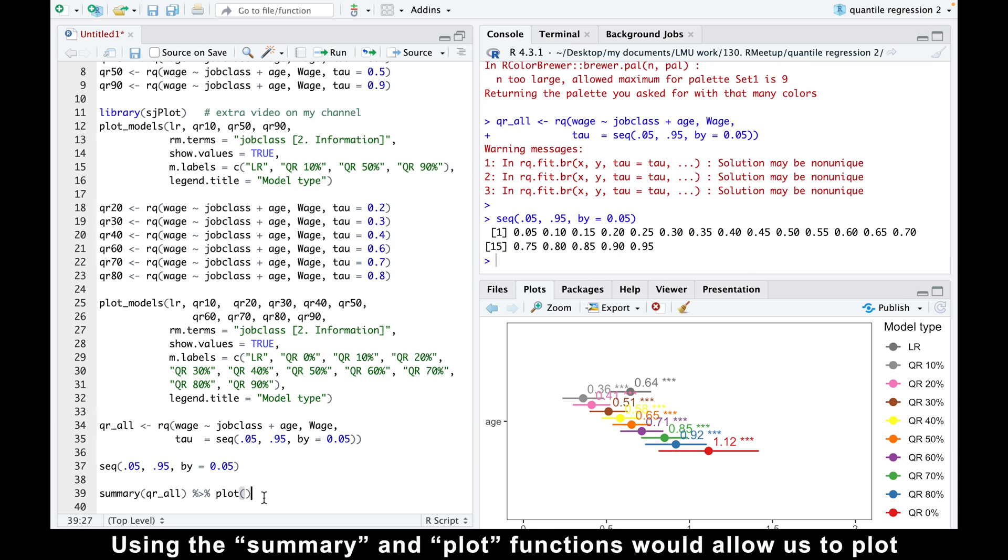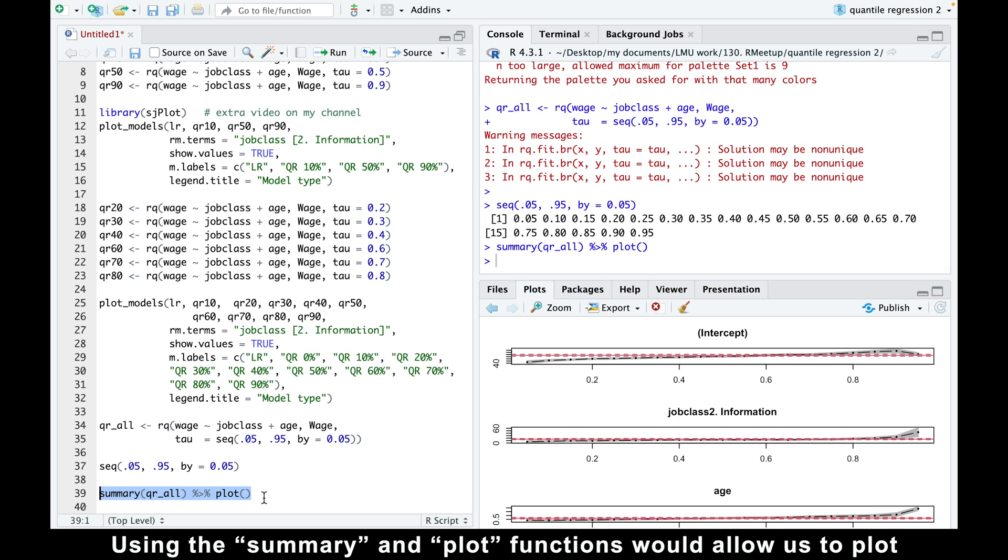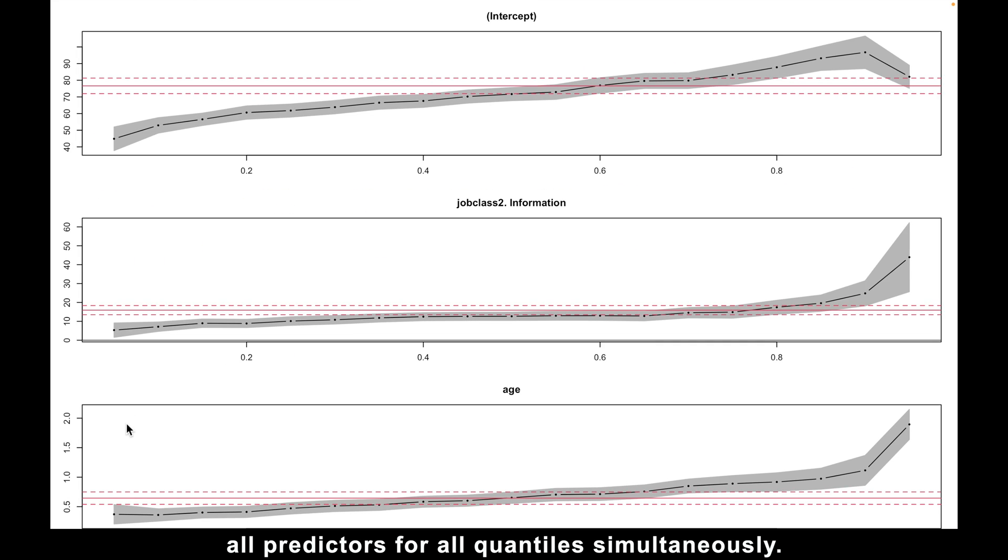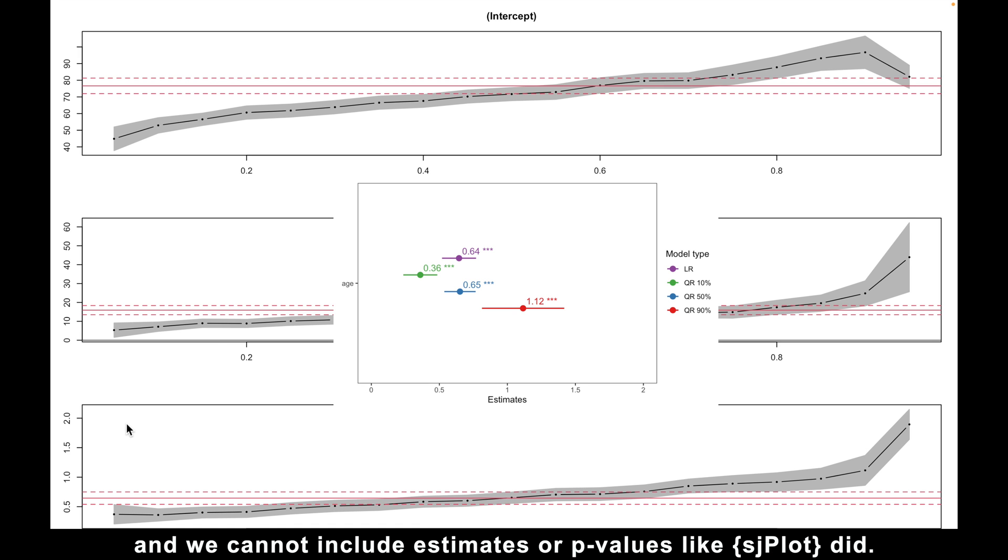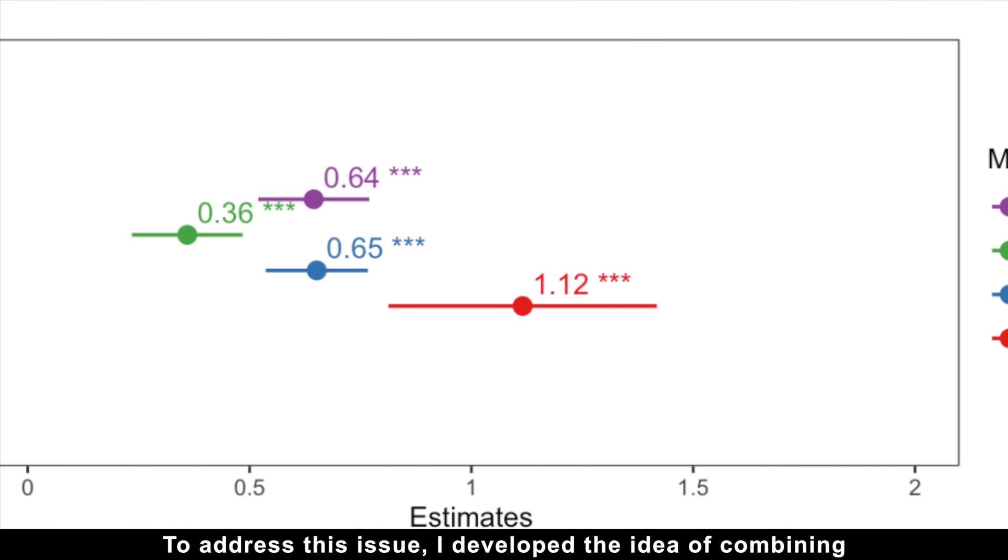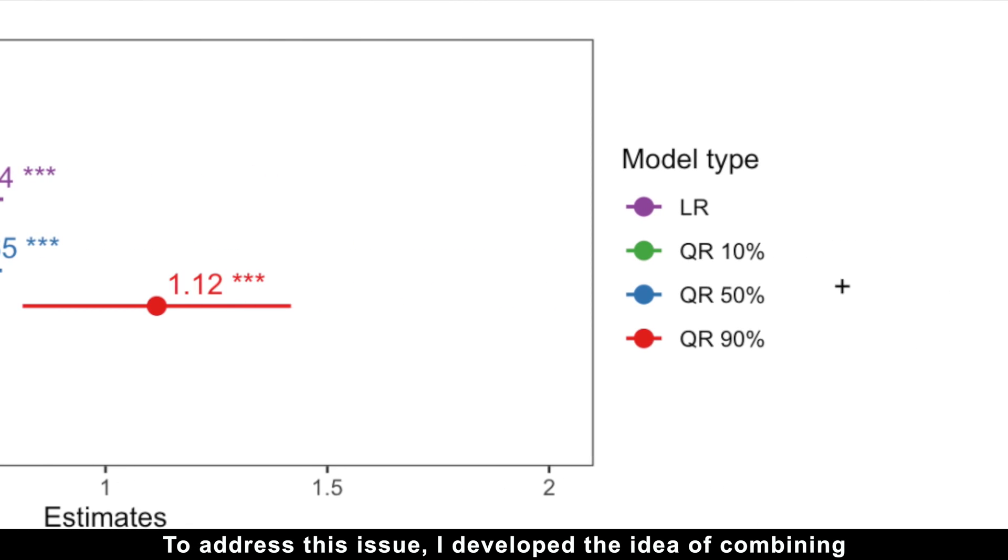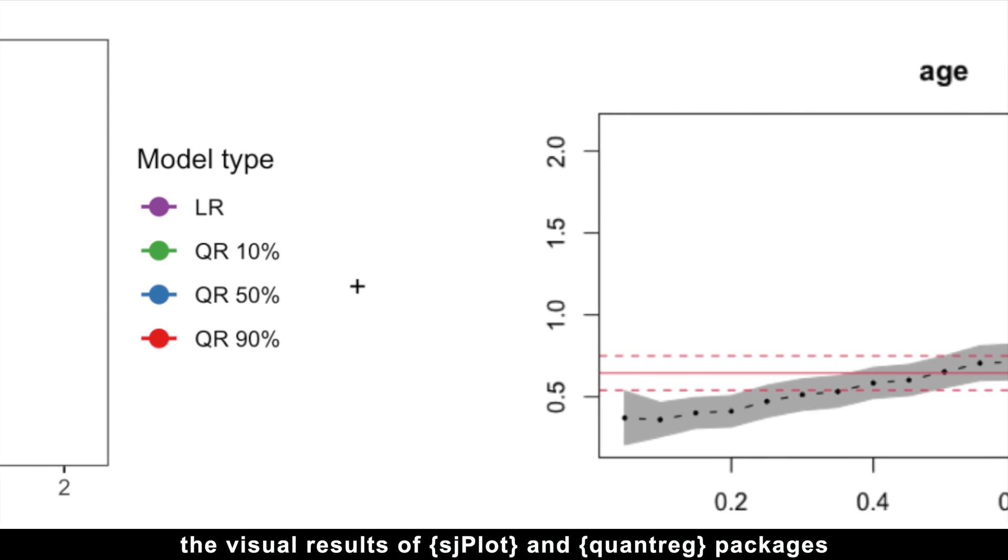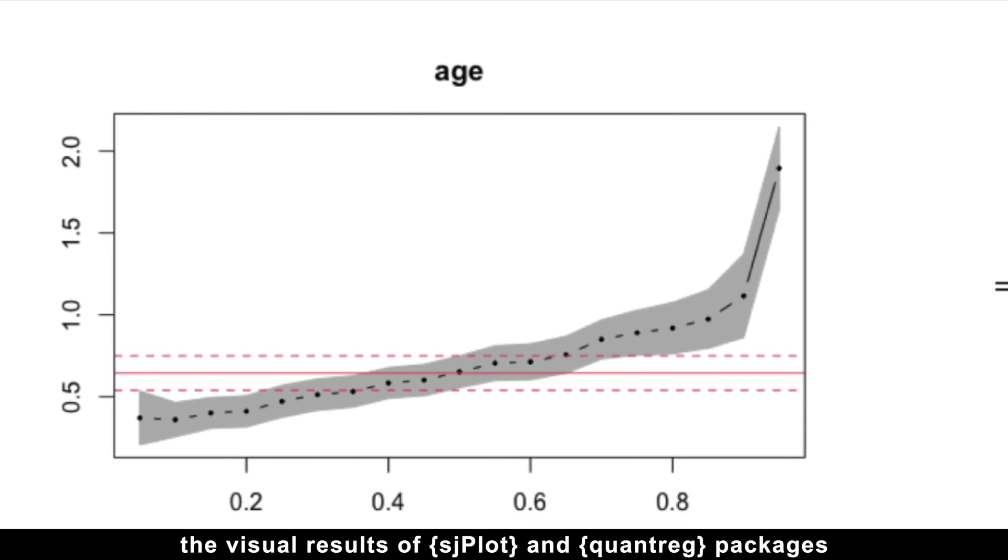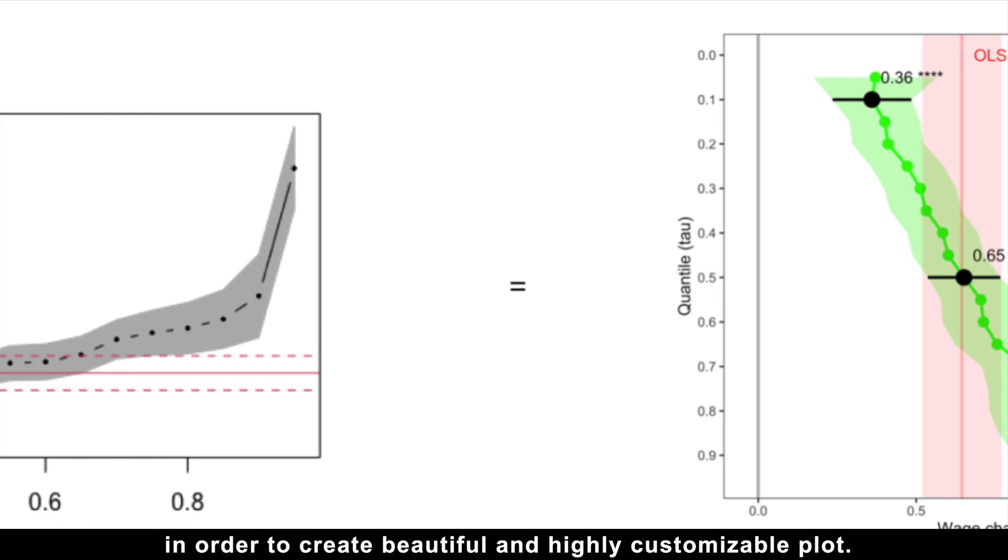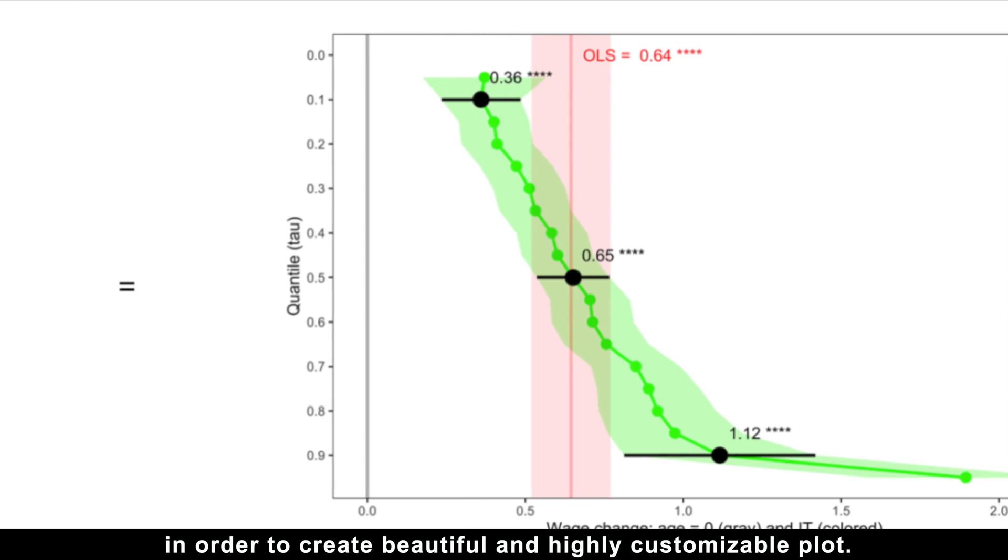Using these summary and plot functions would allow us to plot all predictors for all quantiles simultaneously. However, this visualization is hardly customizable and we cannot include estimates or p-values like sjplot did. To address this issue, I developed the idea of combining the visual results of sjplot and quantreg packages in order to create beautiful and highly customizable plots.